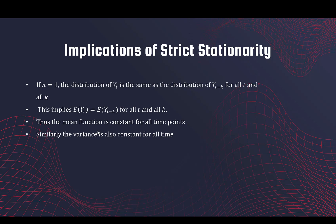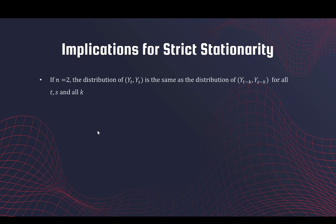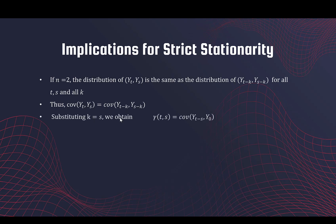Now let's see what happens if we take two time points. We have a pair of variables: the distribution of (yt, ys) is the same as that pair shifted by any constant k, for any t, k, and s. Therefore these two covariances are the same. With a bit of mathematical manipulation, if we take k equal to s, then gamma(t,s) — which is the covariance of yt and ys — equals the covariance with the time points shifted, giving us gamma expressed in terms of t-s.